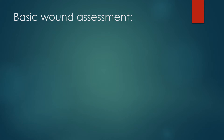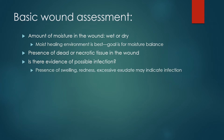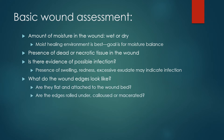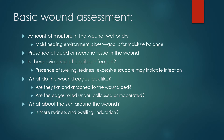For basic wound assessment, first assess the amount of moisture in the wound — is it wet or dry? A moist healing environment is best; the goal is moisture balance. Also assess whether there is presence of dead or necrotic tissue in the wound, and whether there is evidence of possible infection, indicated by swelling or excessive exudate. Look at the wound edges — are they flat and attached to the wound bed, or are they rolled under, calloused, or macerated? And assess the skin around the wound for redness, swelling, or induration.